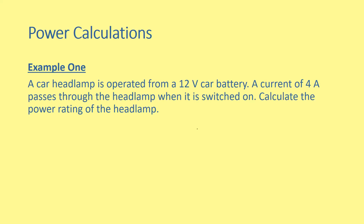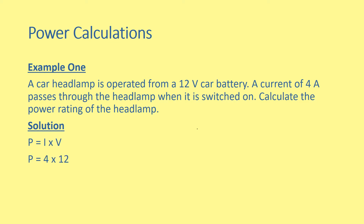Example 1: a car headlamp is operated at 12 volts from a car battery. A current of 4 amperes passes through the headlamp when it is switched on. Calculate the power rating of the headlamp. Solution: P is equal to IV, which is equal to 4 times 12, giving 48 watts.